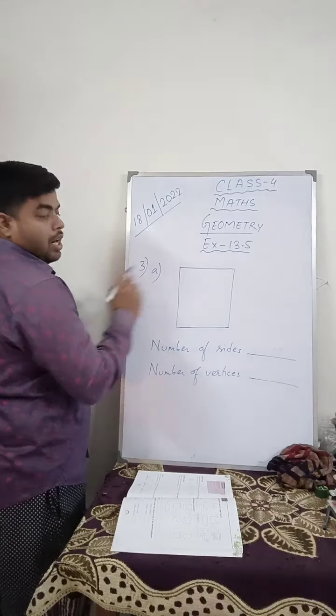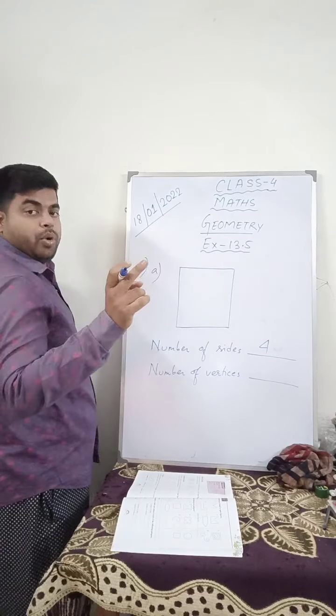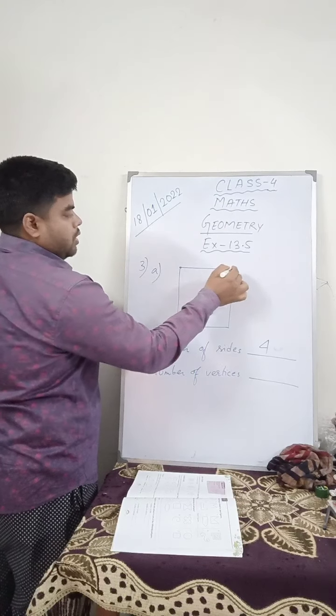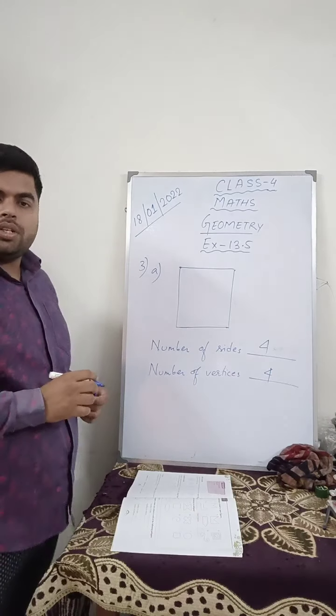So how many sides are there? One, two, three, four. Four. And vertices means the meeting point of the sides. Corner. One, two, three, four. Are you guys understood this, children?